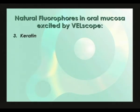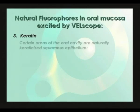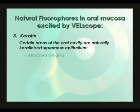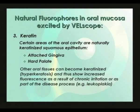Keratin is a structural protein that fluoresces strongly when excited by blue light. Certain areas of the oral cavity are naturally keratinized squamous epithelium — the attached gingiva and hard palate. Other oral tissues can become keratinized, hyperkeratosis, and thus show increased fluorescence as a result of chronic irritation or as part of the disease process — for example, leukoplakia. All other things being equal, this keratin layer, if thick enough, can show up quite brightly under Velscope.